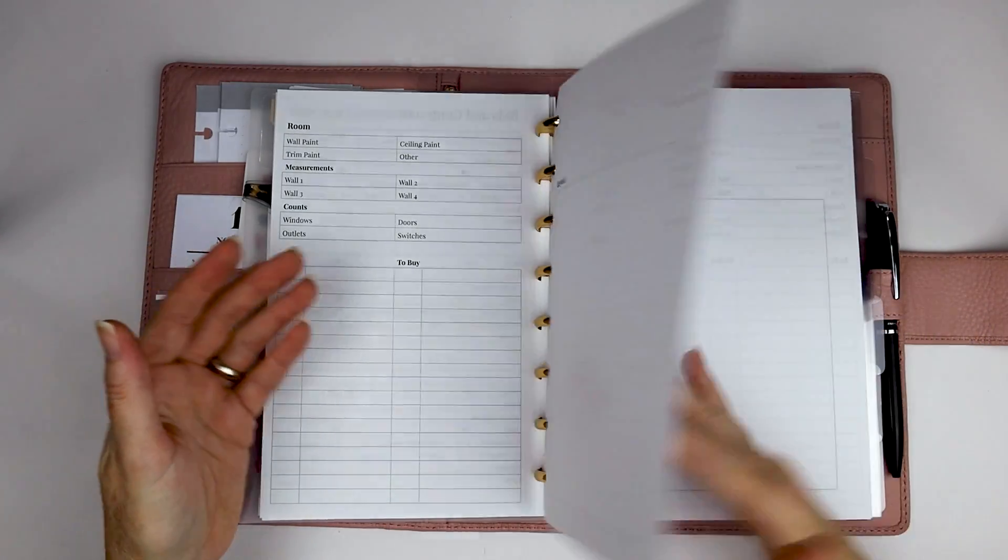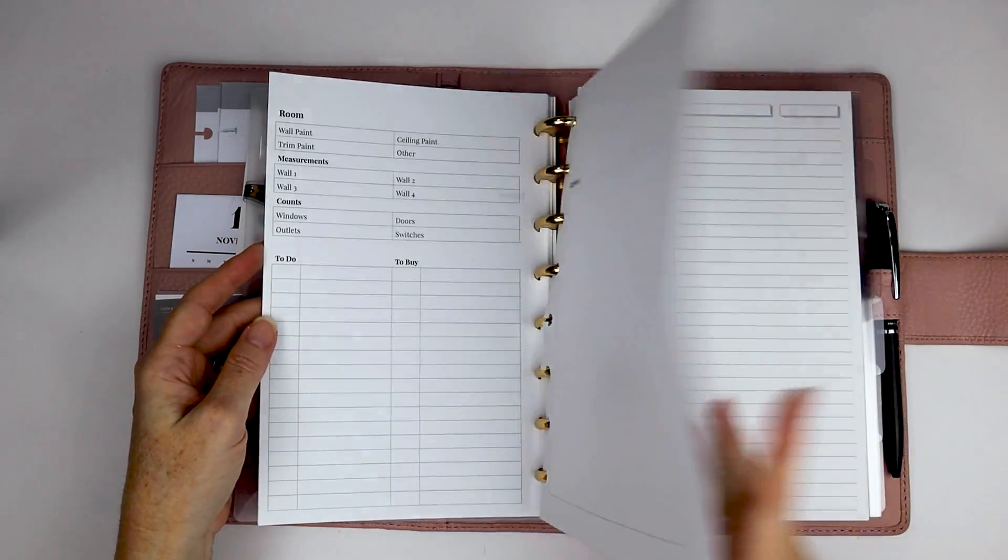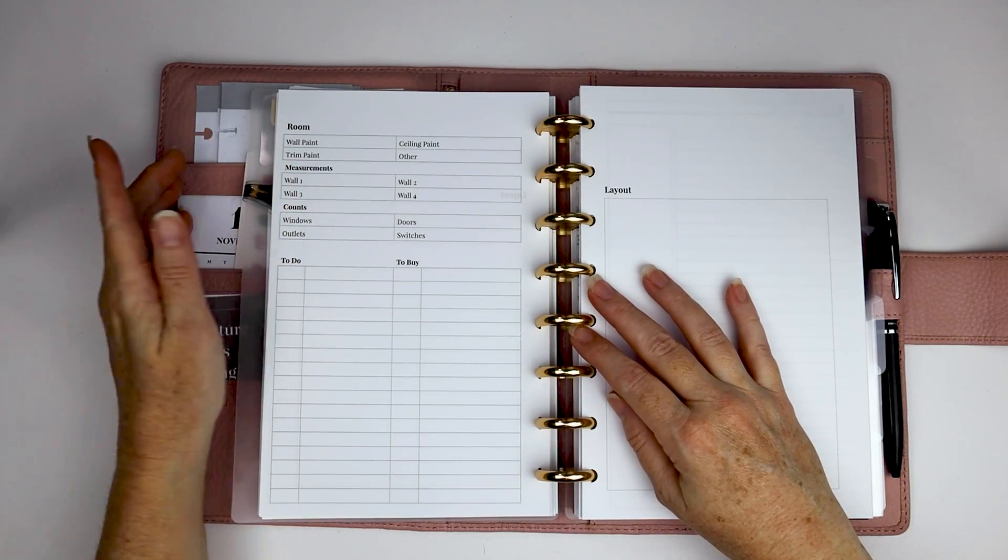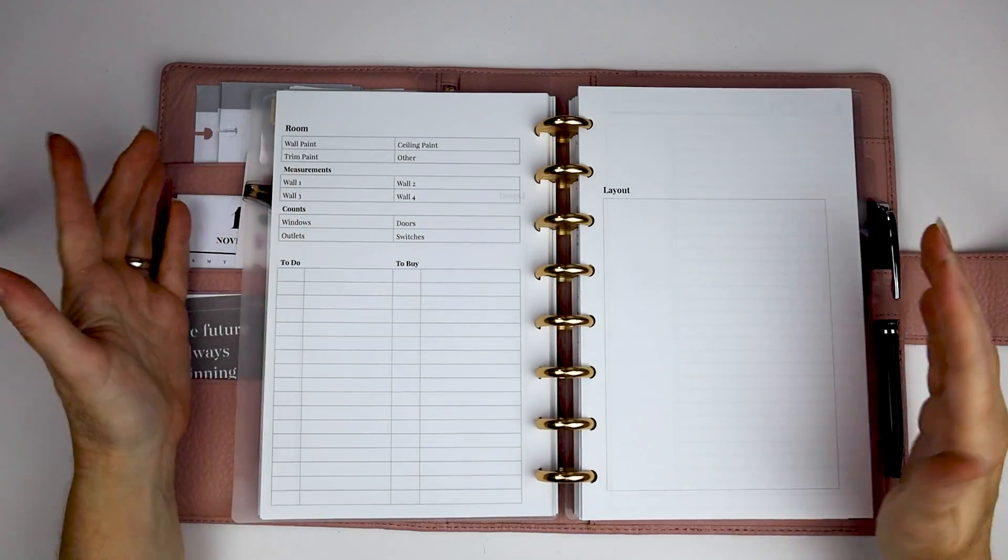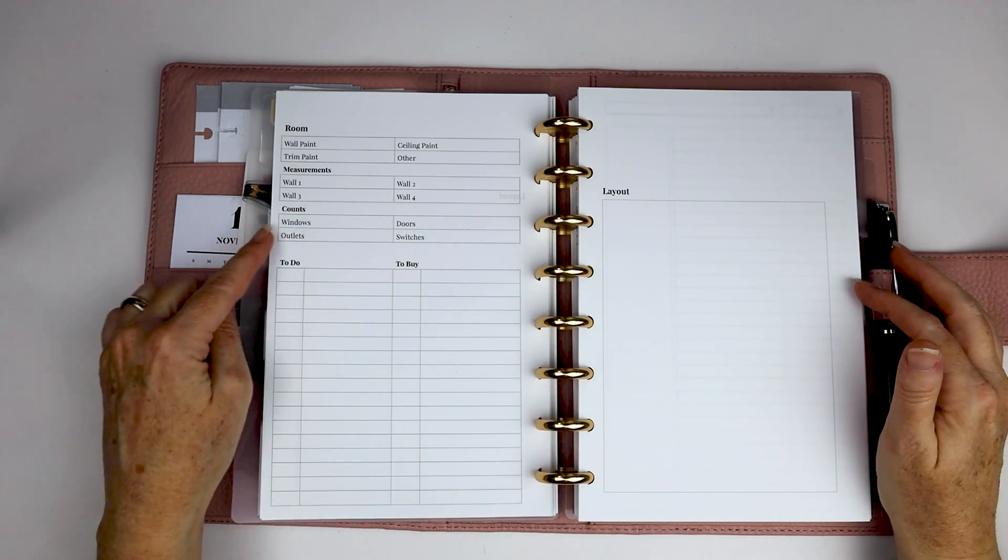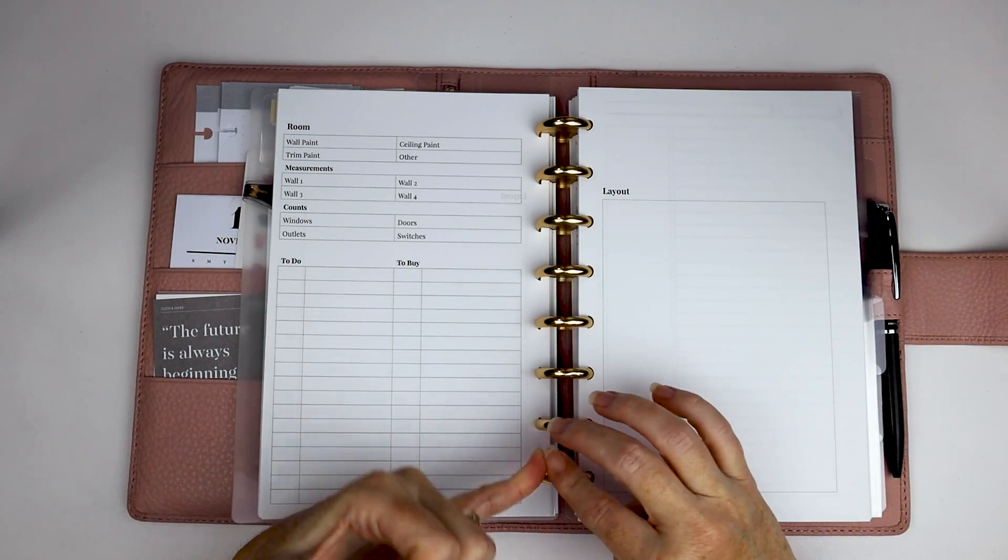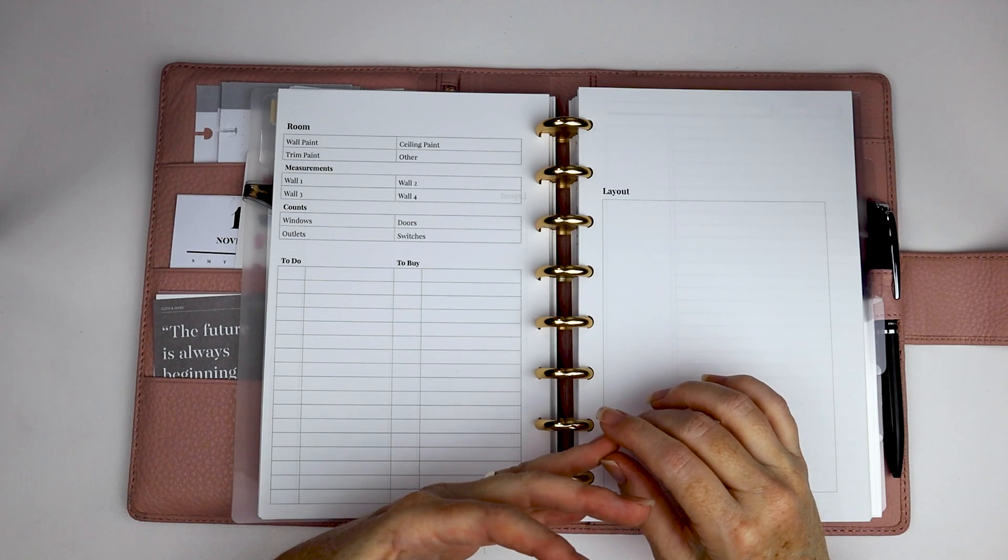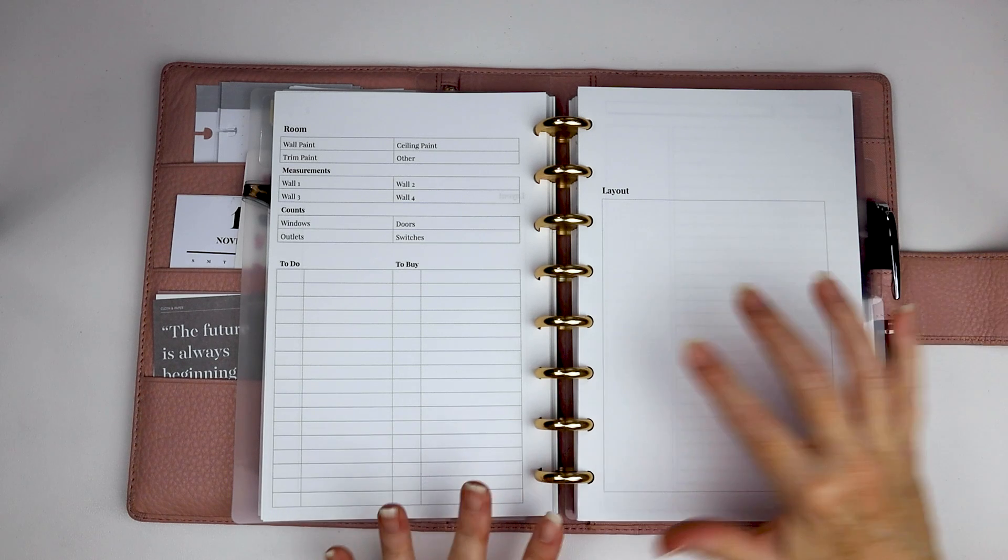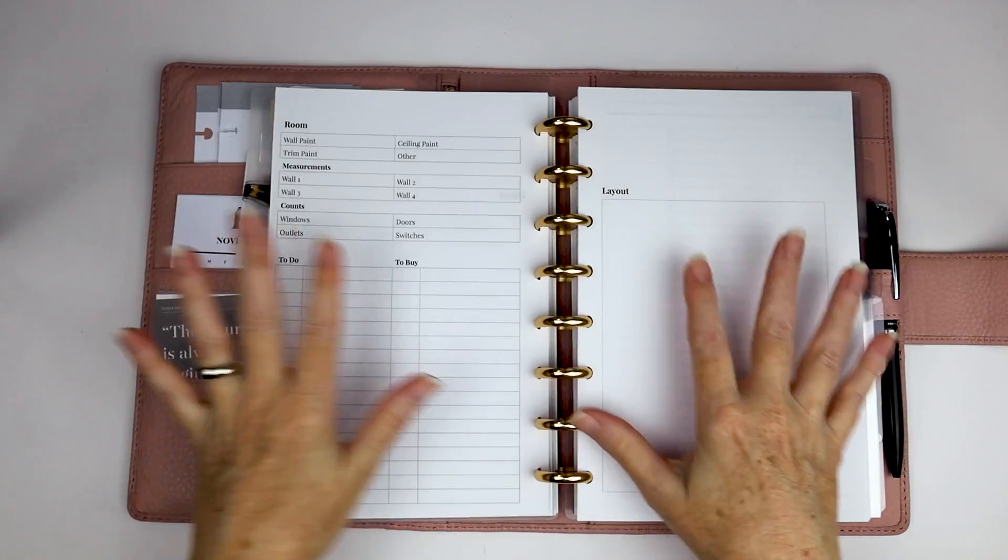And then I have a few pages of just some room information. So if you're redecorating, you can make a note of paint color for your walls, trim, ceiling. You can measure your walls so you know how much room you have. You have some, a blank square so you can kind of mock up how you want to lay out your furniture. If you need to count how many windows, outlets, doors, switches you have. So you know that for buying curtains. If you're replacing knobs in your house. There's two columns, one for to do and then one for to buy. So this is kind of a quick and dirty way to make notes about what you want to do in each of your rooms. And there are five of those.